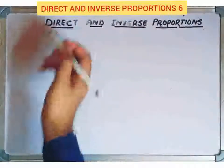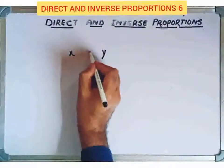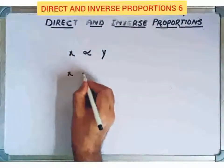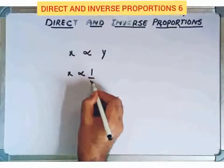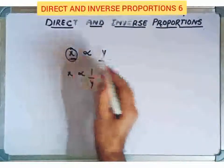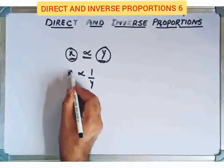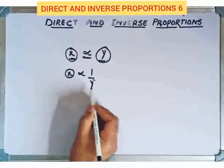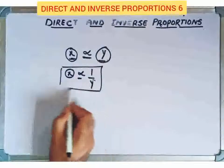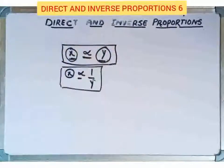We'll look at two variables, x and y. If they are in direct proportion, that's written as x is directly proportional to y. In the case of inverse proportions, we write that x is inversely proportional to y. In direct proportion, the two variables increase together — if x increases, y also increases. In inverse proportion, if x increases, y decreases, and if x decreases, y increases.